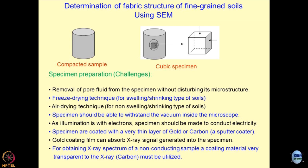Soils are mostly non-conducting materials for electrons, so we need a conducting surface. What is done is that we apply a thin layer of gold or carbon — this is known as sputtering — to make the sample a conductor of the electron beam. This is more of an art than engineering. Making a specimen requires a lot of good hands and training, but once you have made the samples useful for studying microstructure, the desired information can be deciphered very easily.